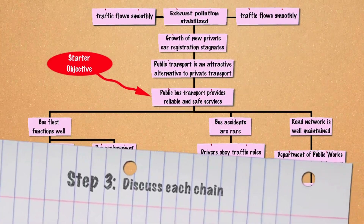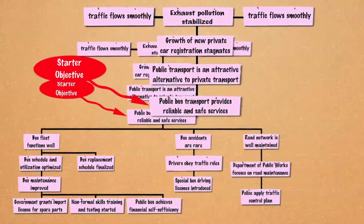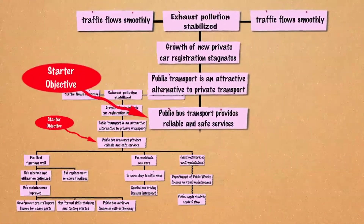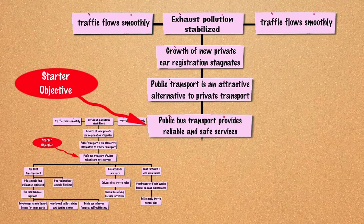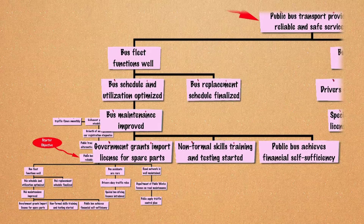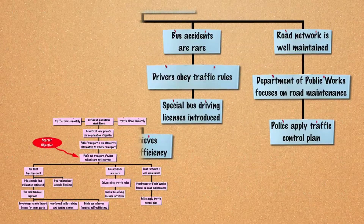Step 3: Discuss each chain. Discuss each results chain with the stakeholder groups, the EA, and the project team, if they are already on board, to understand how each chain will affect them, positively or negatively. In this analysis, check if each chain is likely to lead to or influence the project outcome by factoring in the available resources, EA capacities, beneficiaries' interests, and political feasibility. While critically examining each means and branch, identify and note all potential outputs and activities.